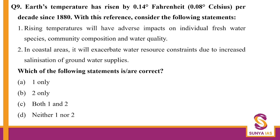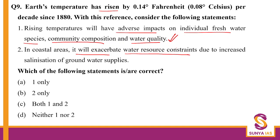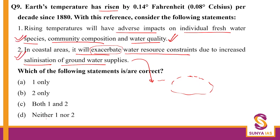Question 9: rising temperatures will have an adverse impact on individual freshwater species, community composition, and water quality — yes, this is going to happen. In coastal areas, it will exacerbate water resource constraints due to increased salinization — increasing temperatures will shrink water habitats and expose more salt content, impacting coastal communities. Both statements are correct. The answer is 1 and 2.